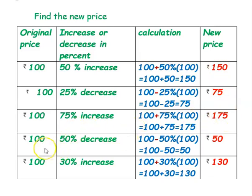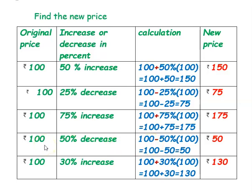The next example: original price is ₹100 and it is a 50% decrease. Since it is a decrease, we subtract. So, 50% of 100 is 50. Therefore, 100 minus 50 equals ₹50. The new price is ₹50.